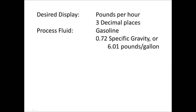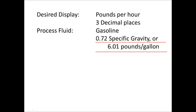We need to know the density of our fluid. Let's say it's gasoline with a specific gravity of 0.72 at our operating temperature. A specific gravity of 0.72 is equal to a density of 6.01 pounds per gallon. We also need to decide how many decimal places we will show on the display. For our model 213 meter, we can easily show measurements to three decimal places to report flows to a thousandth of a pound.